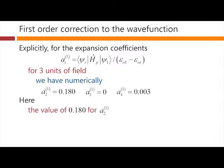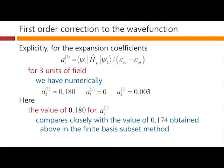Here, the value of 0.180 for a_21 compares rather well with the value of 0.174 that we got above when we did a finite basis subset method.